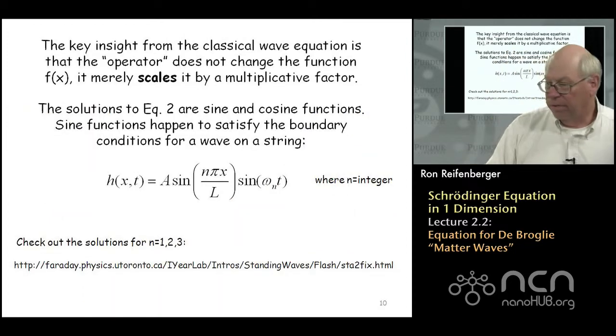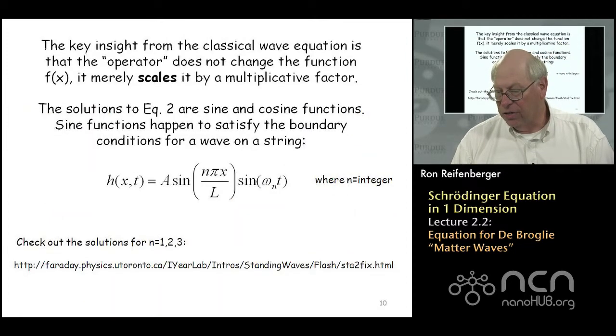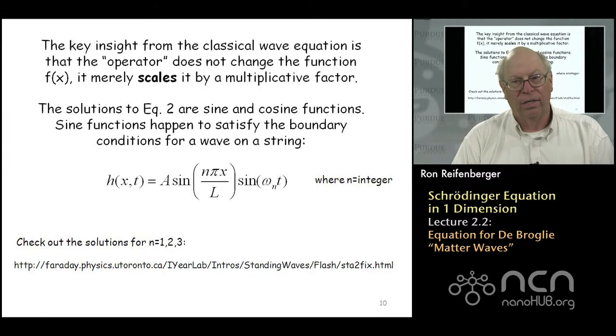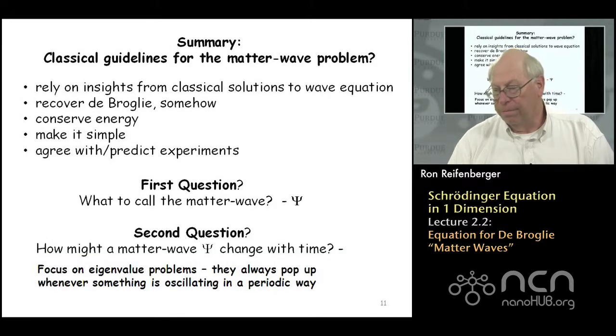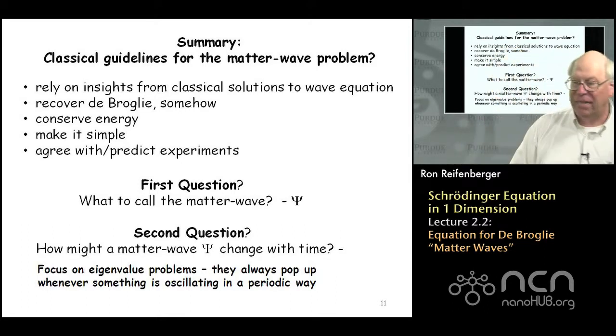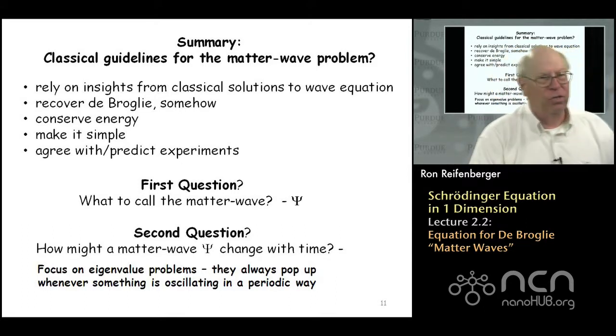And so since this is a standard solution to all wave equations, why not insist that this equation for de Broglie matter waves, why not insist that it have this eigenvalue form to it? So here I just summarize what I've already said. The key insight from looking at the classical wave equation is that the operator does not change the function, but just scales it by a multiplicative factor. Whenever you have a situation like that, that's referred to as an eigenvalue problem.